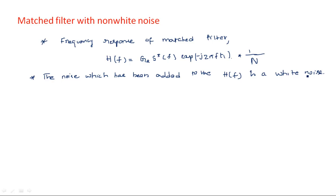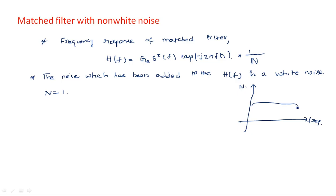White noise has a uniform spectral density, so even if you add or delete it in the expression it will not affect the entire equation. If you draw the frequency response characteristics of white noise, with frequency on the x-axis and noise spectrum N on the y-axis, it has uniform spectral density with value unity throughout the frequency range, say from 100 Hz to 100 kHz. That is why we have not shown the noise in the matched filter expression.